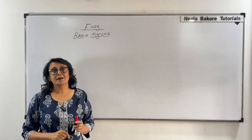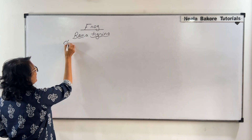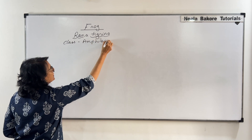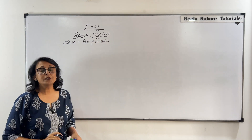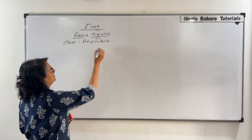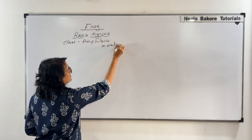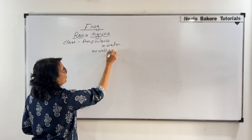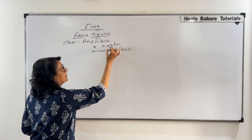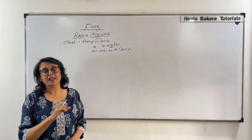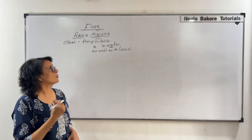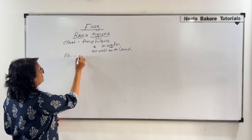These frogs are amphibians, so we place them in class Amphibia. Amphibians are those animals which can live in water as well as on land. The requirement of water is for their reproduction, and that is why they are always found closer to or in a water body. They are in phylum Chordata.